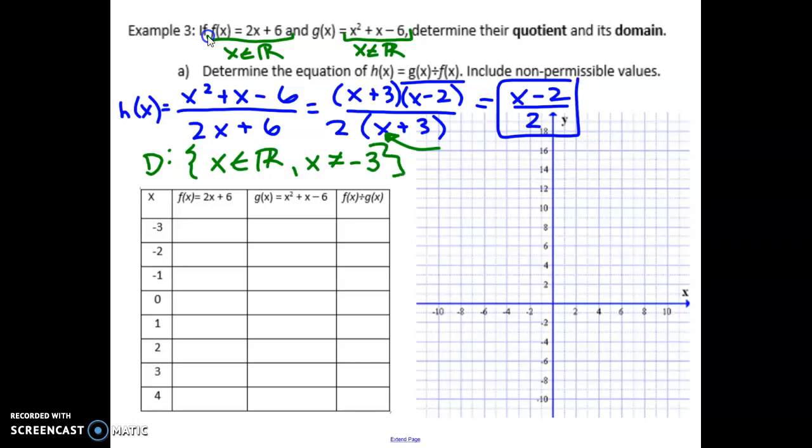Now at negative 3, what's actually happening? It's a hole. Good. So remember that whenever you have a factor on top and the bottom that can cancel out, you actually have a hole left in that slot.